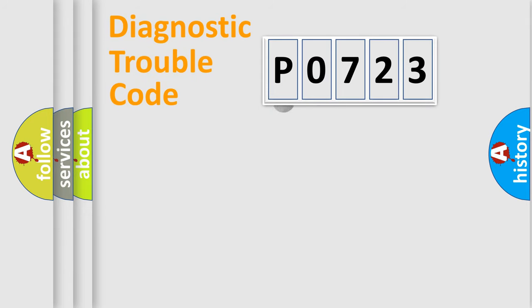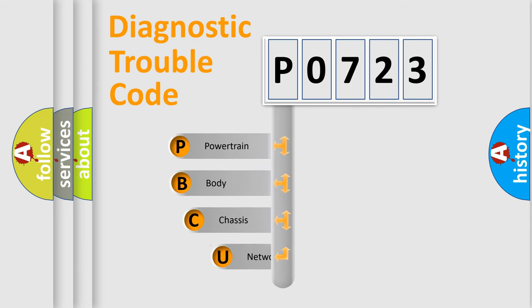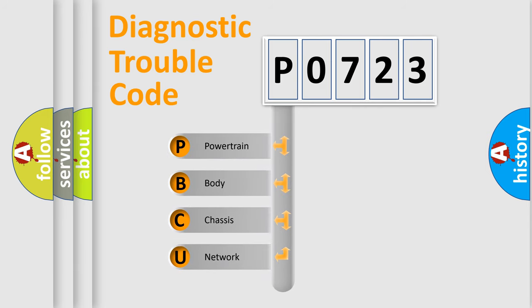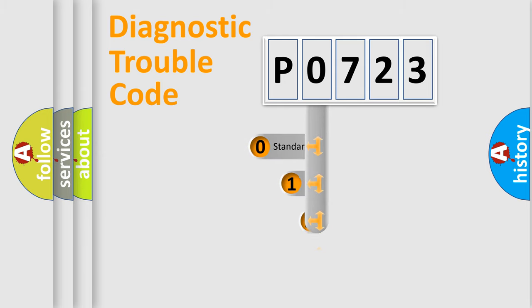First, let's look at the history of diagnostic fault code composition according to the OBD2 protocol. We divide the electric system of an automobile into four basic units: powertrain, body, chassis, and network. This distribution is defined in the first character of the code.